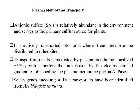Seven genes encoding sulfate transporters have been identified from Arabidopsis thaliana. Arabidopsis thaliana is a model plant used for different plant studies — it germinates easily and its genome has been fully sequenced. Most plant experiments start on Arabidopsis thaliana and then proceed toward other plants.